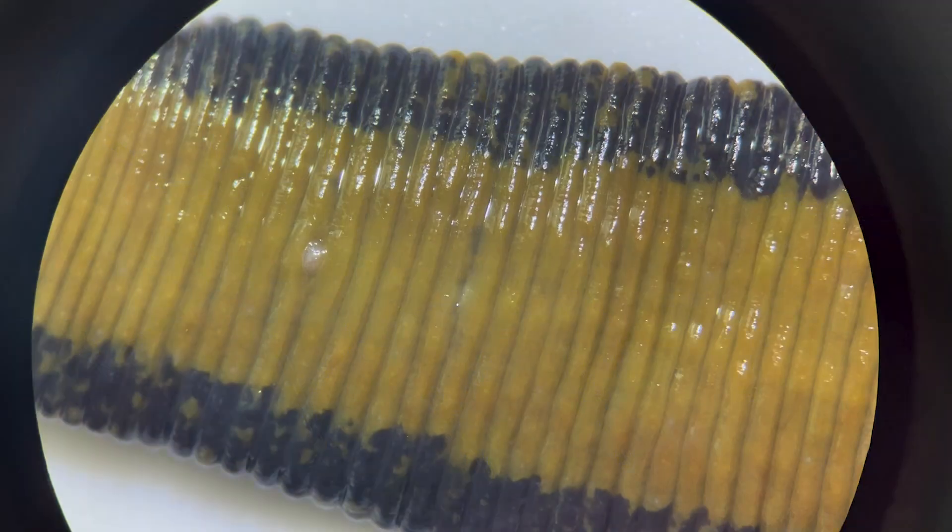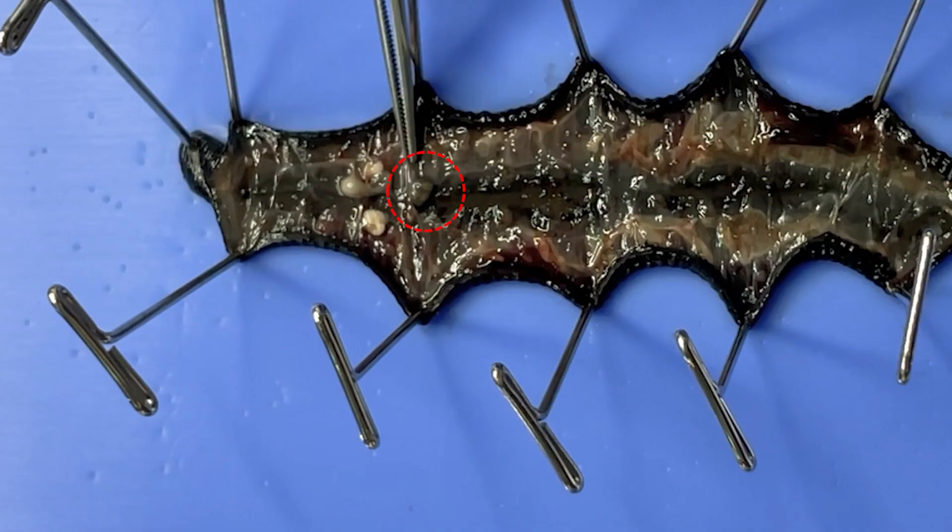The male genital pore is located below this area. And below that, there are the female genital pore and connected ovaries.